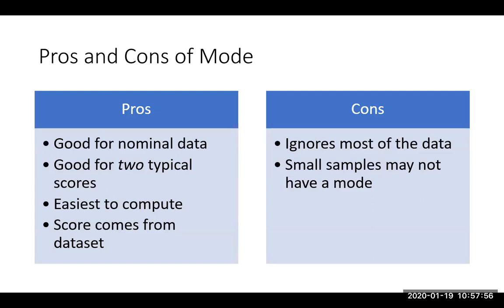Another downside is that you may end up with no mode at all. For example, if four people report shoe sizes of 6, 7, 9, and 10, no answer appears more than once, so there's no mode. That's a problem because the whole goal of a measure of central tendency is to come up with one score that best represents everybody — and with the mode, you might end up with no score at all.